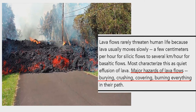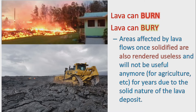The major hazards of lava flows include burying, crushing, covering, and burning everything in its path. Once the affected areas solidify, the land is rendered useless and will not be useful anymore, especially for agricultural uses for years, due to the solid nature of the lava deposit — as you can see in the photo.